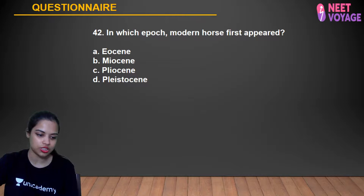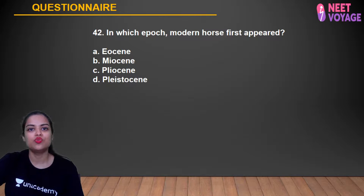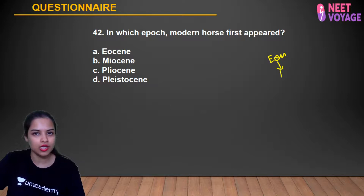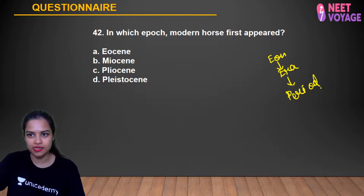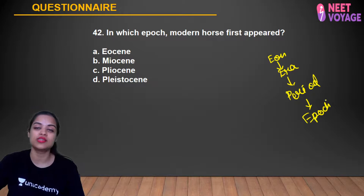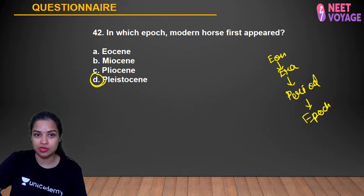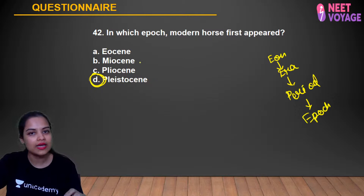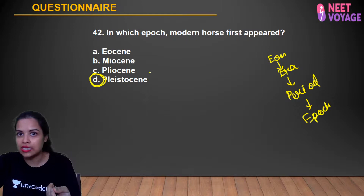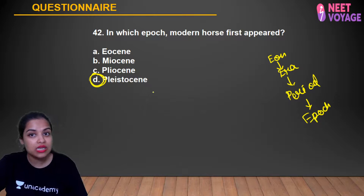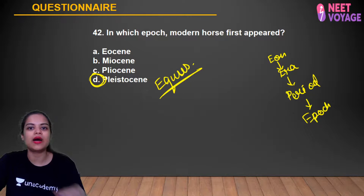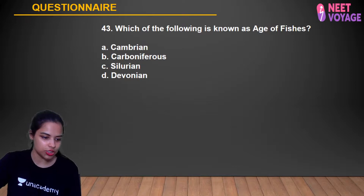Question 42: In which epoch did the modern horse first appear? The geological time scale: eons → eras → periods → epochs. The sequence of epochs includes Eocene, Oligocene, Miocene, Pliocene, Pleistocene. The modern horse (Equus) first appeared in the Pleistocene epoch. Before that, earlier horse ancestors evolved from the Eocene onward. Pleistocene is the correct answer. Sabha, Ritik, Anshika, Shashank, Tanusha, Kamal, Simran, Sumrine gave the correct answer.